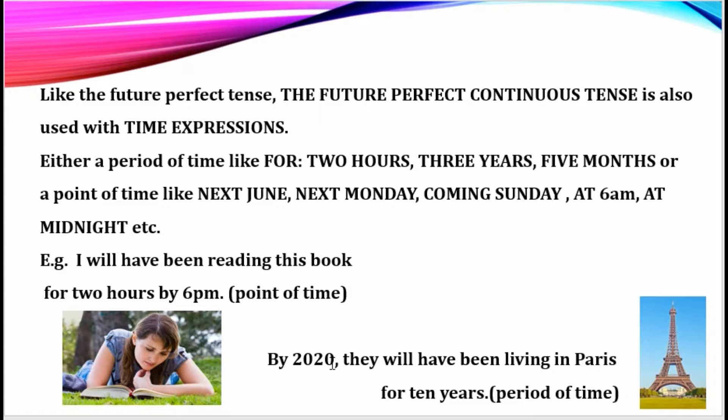'By 2020, they will have been living in Paris for 10 years.' Here the period of time mentioned is 10 years. They are not going to go out of Paris. We are not mentioning the completion of the action over here — that's what you have to understand.